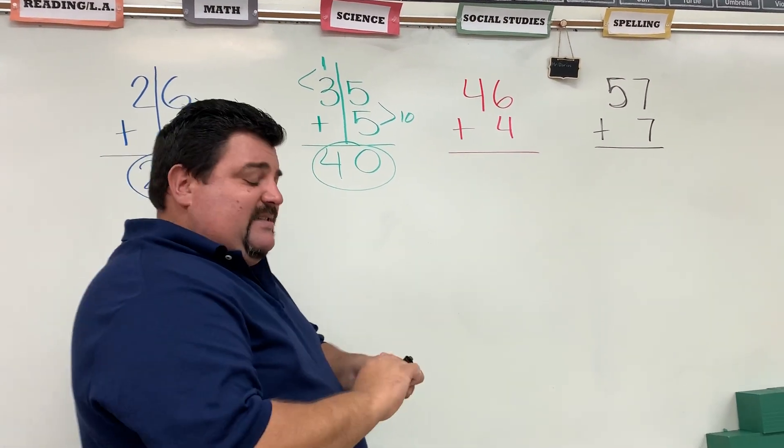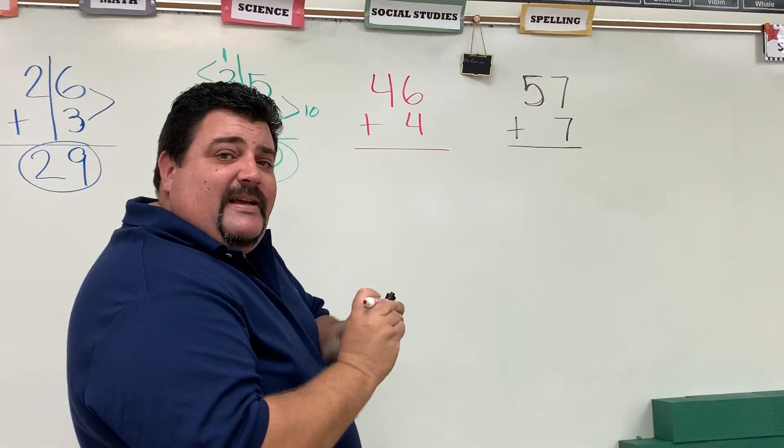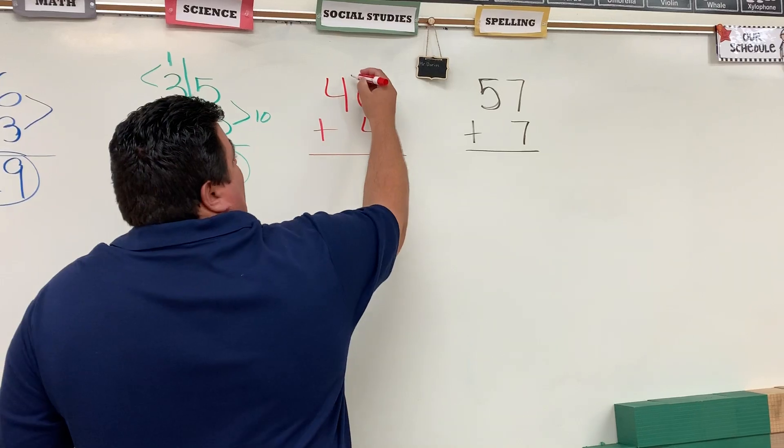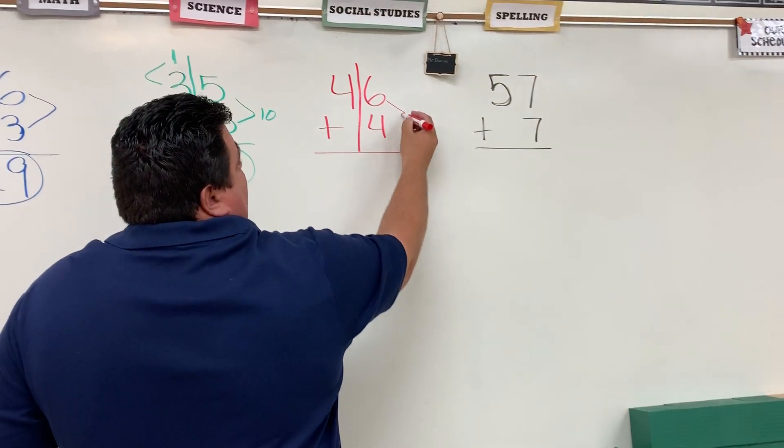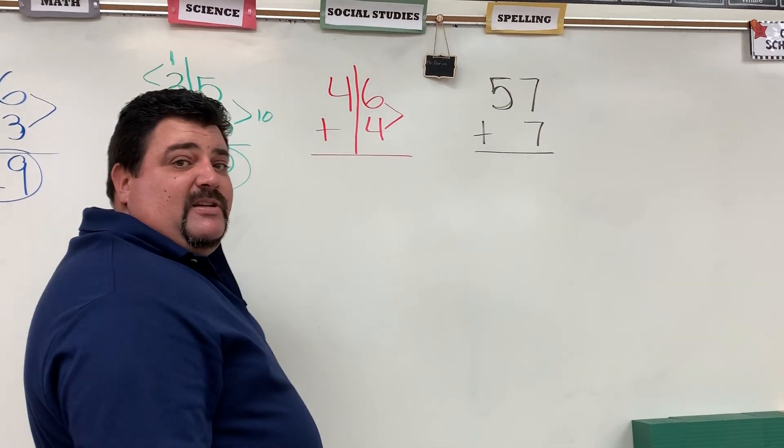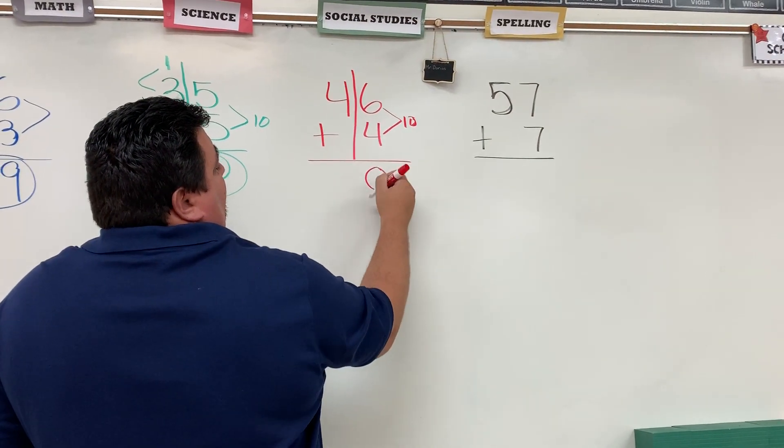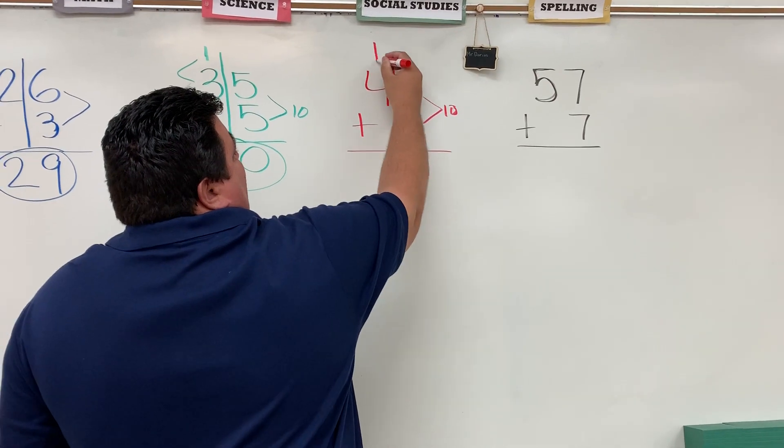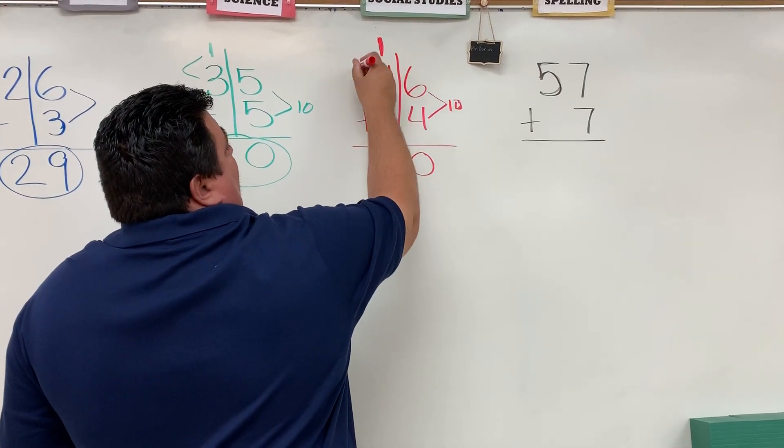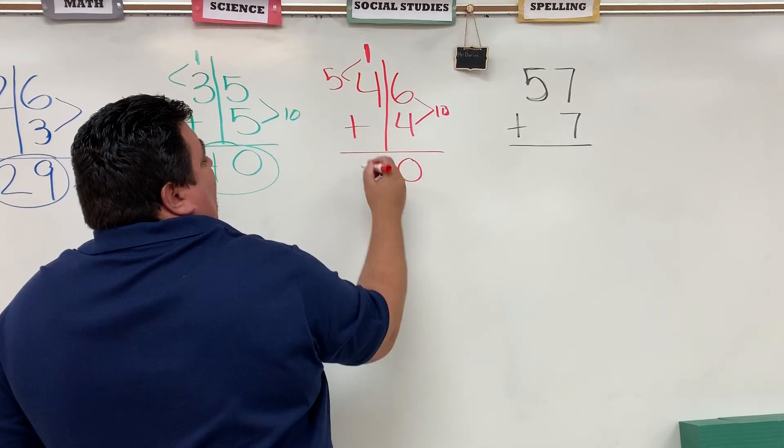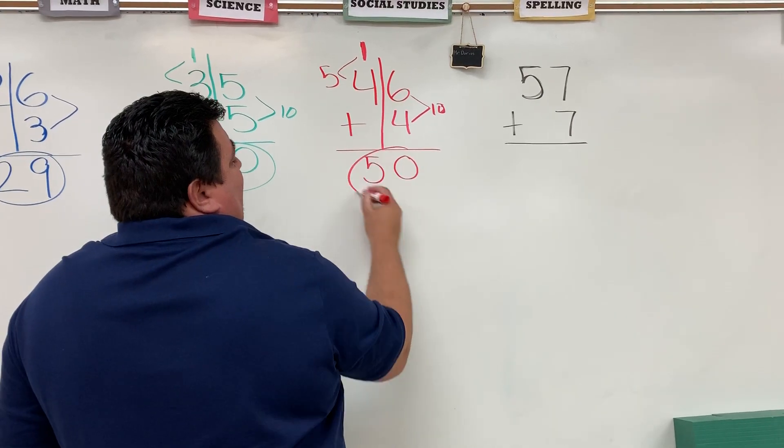Third example I'm going to be giving you is the same thing. Please pay attention. You draw your line down the middle. Six plus four is ten. When I get my ten, I got to put my zero here because that's the ones and my tens here. So now I have one plus four is five. My answer is fifty.